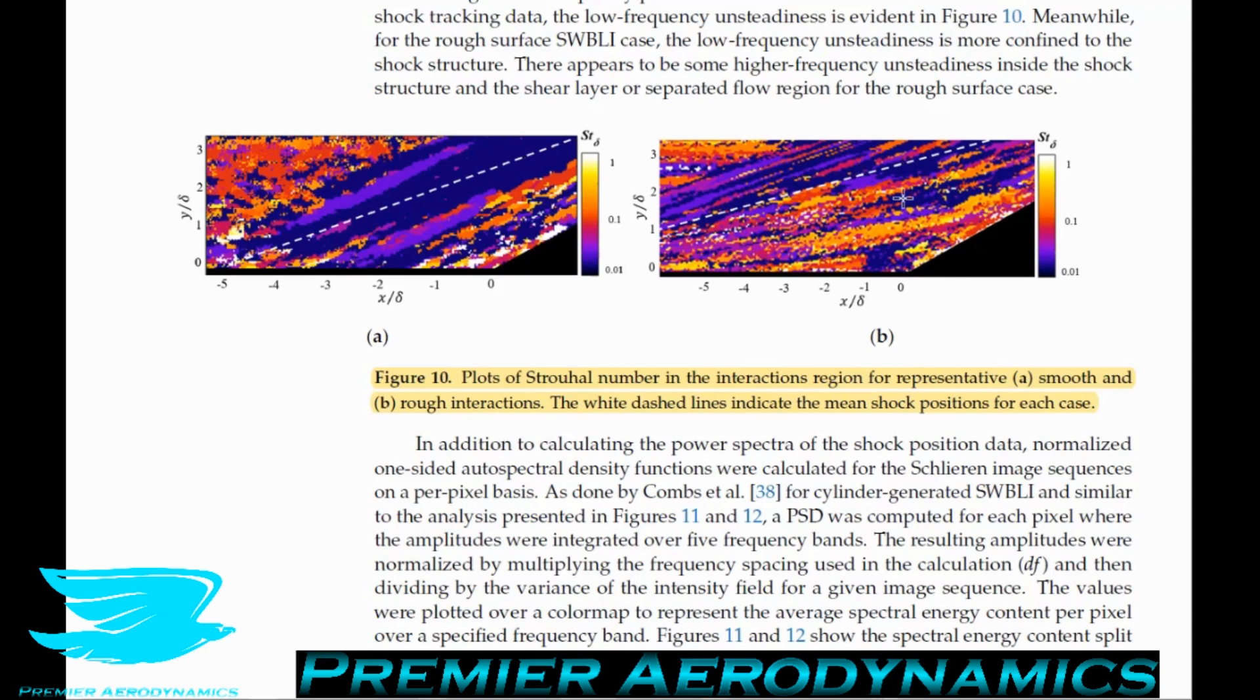It is interesting to observe that although a low frequency peak was not observed in the power spectral density of the smooth surface shock, the low frequency unsteadiness is evident in figure 10. So what they're saying here is the images are showing that there is data that they're not picking up in other ways, namely that there is high energy at low frequencies in the smooth surface shock, but they didn't see that in the other data. So it may be there, it may not. Meanwhile, for the rough surface shock wave boundary layer interaction case, the low frequency unsteadiness is more confined to the shock structure. There appears to be some higher frequency unsteadiness inside the shock structure and the shear layer or separated flow region for the rough surface case. But for the smooth surface one, there seems to be more energy at low frequencies, which they didn't pick up from their other measurements.